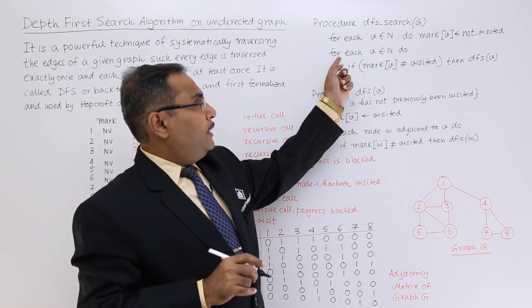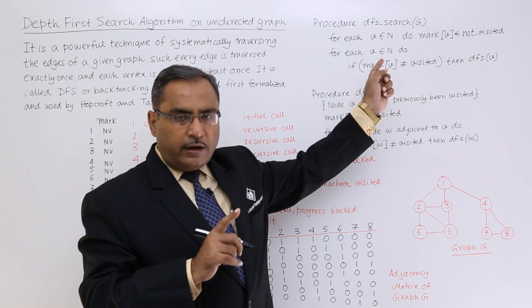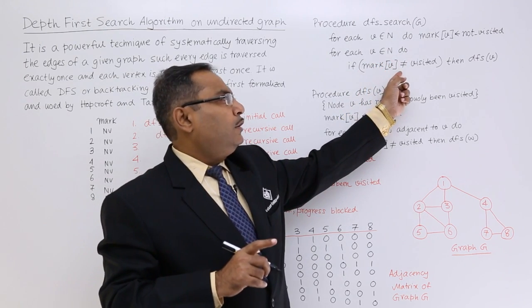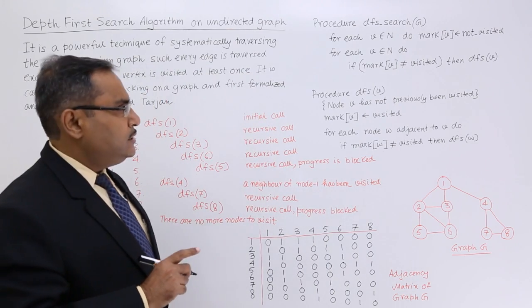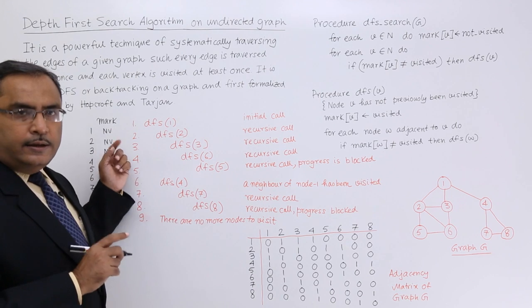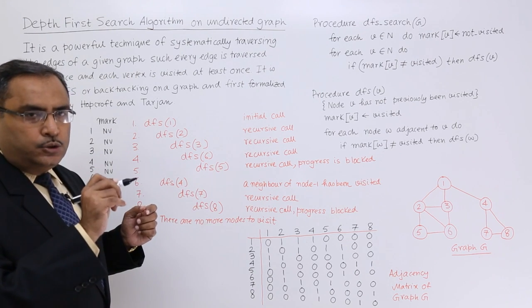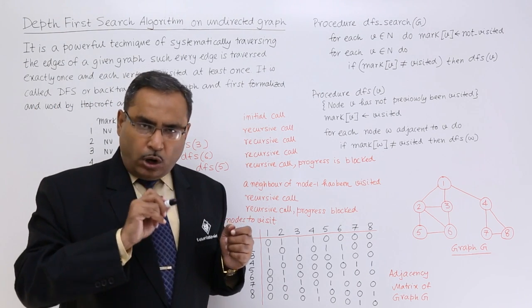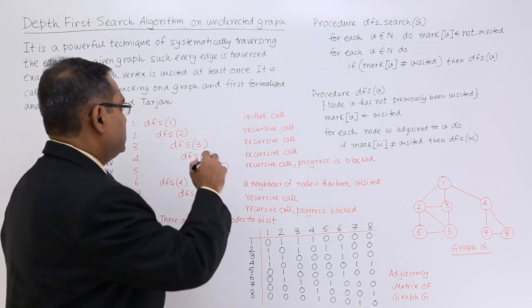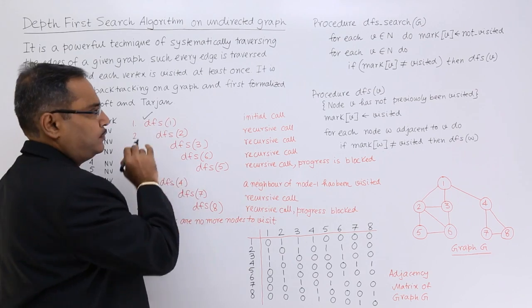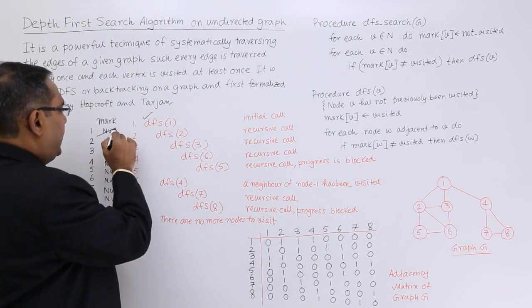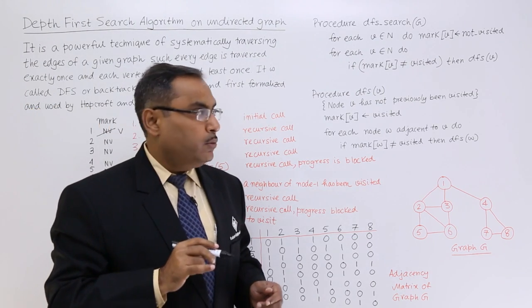For each vertex v belonging to n, if mark of v is not equal to visited, then call DFS(v). We consider the first vertex, which is 1. Mark of 1 is 'not visited', so we go for DFS(1). Inside DFS(1), mark of 1 is set to visited, so location 1 in the mark array becomes visited.